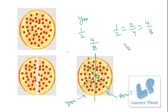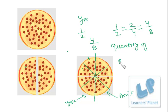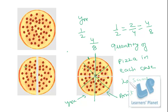That means half is equal to two by four and that is equal to four by eight. So four by eight is equal to two by four is equal to one by two. In each case the quantity of pizza you are eating is the same. You have cut the pizza into smaller pieces, that's why the number of equal pieces is increasing but the number of your portion is also increasing. If there are two portions you eat one portion; if there are four portions you eat two portions; if there are eight portions you eat four portions.